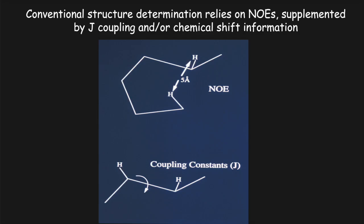Why do we need residual dipolar couplings? Let's first go back and evaluate how we normally, conventionally, determine macromolecular structure. All the classical protein structure determination is essentially based on the use of NOEs, J-couplings, perhaps chemical shifts, and each of those is essentially a local constraint. For example, when we measure NOEs, we measure short inter-nuclear distances between pairs of protons — provided they are less than five angstroms in space, we can measure an inter-nuclear NOE effect and translate that into an inter-proton distance.